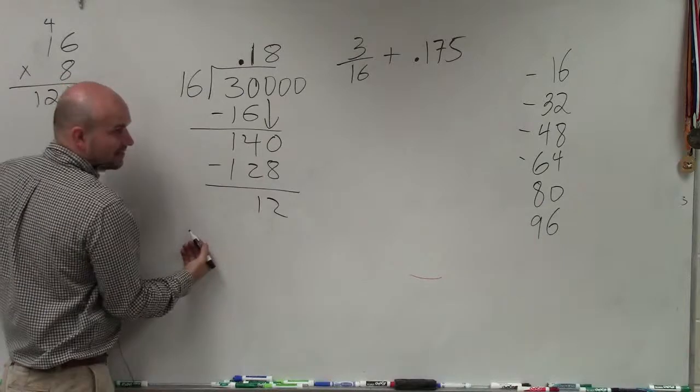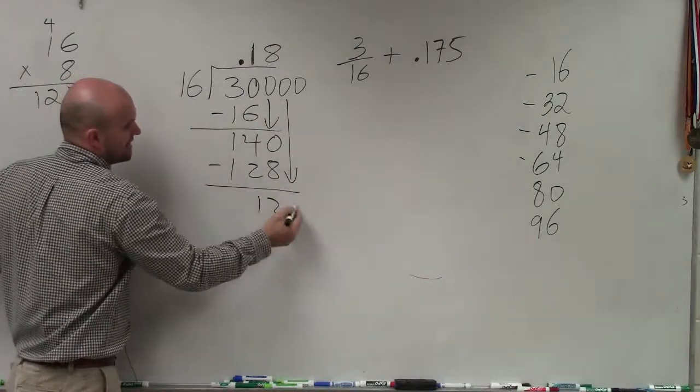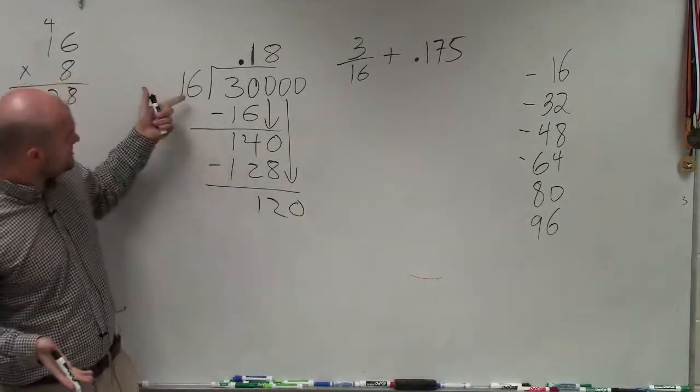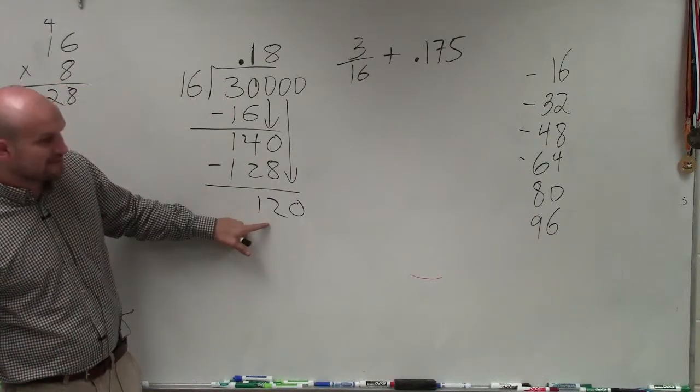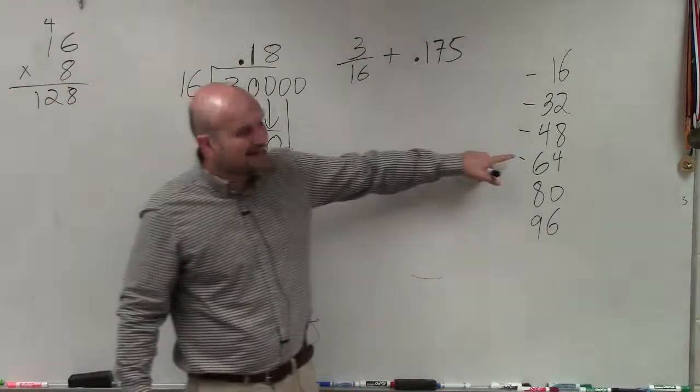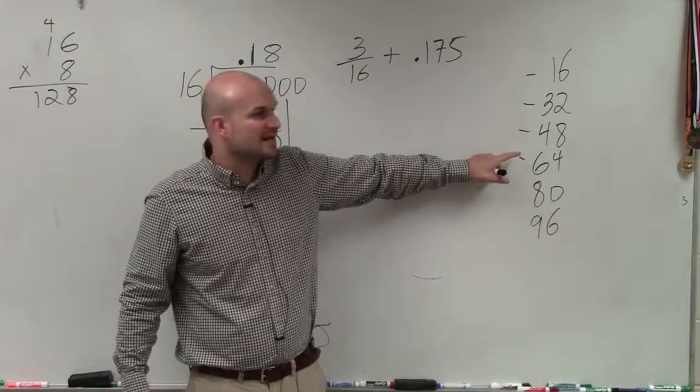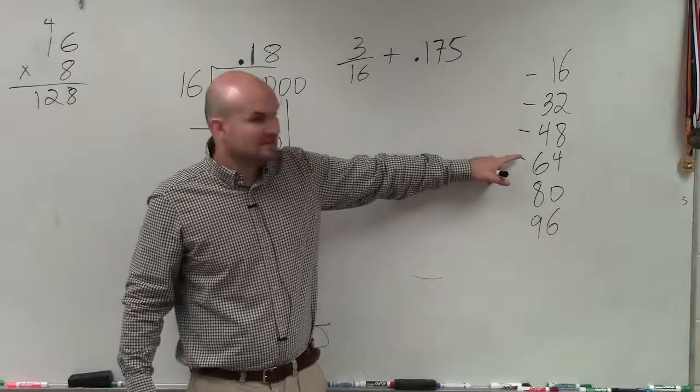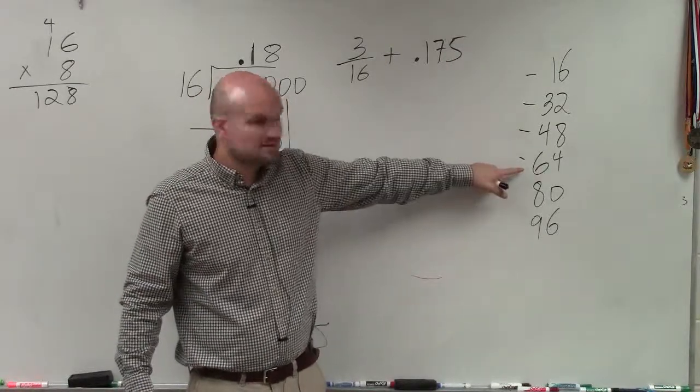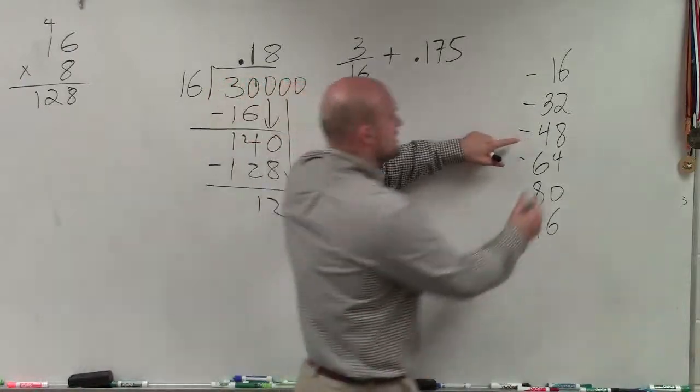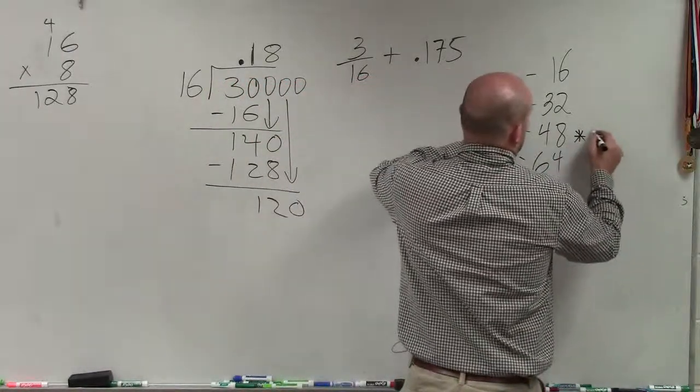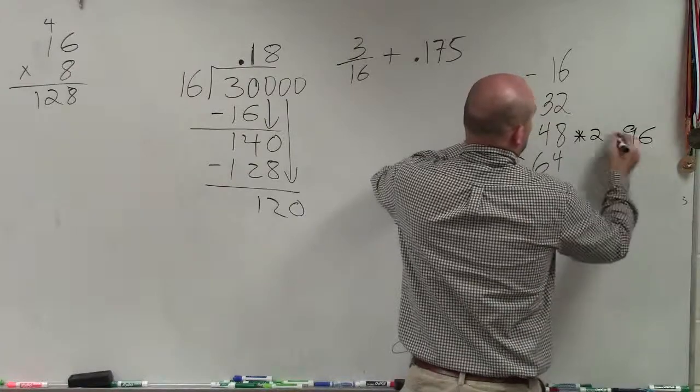16, again, does not go into 12. So I bring down my next 0. Now, again, I can use that same thought process. 16 divided by, or how many times does 16 go into 120? Again, look at these numbers. What is the largest number that I can double to give me less than 120? Well, this was 128, so it has to be 48. 48 times 2 is 96.